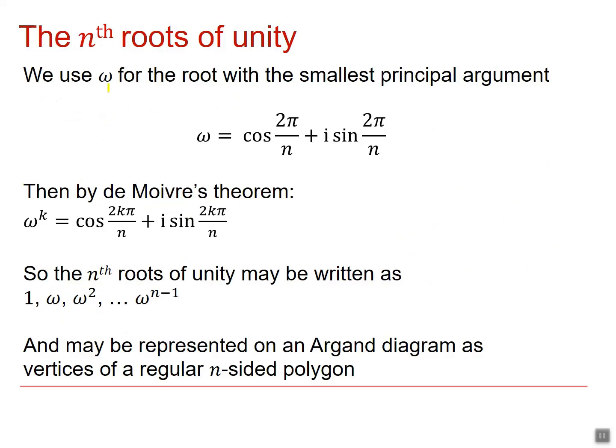We use the letter omega for the root with the smallest principle argument. So it would be this one. So by De Moivre's theorem, we get that omega to the k is going to be cos of 2k pi by n plus i sine 2k pi by n. So the nth roots of unity can be written as a sequence 1, omega, all the way up to omega to the n minus 1.